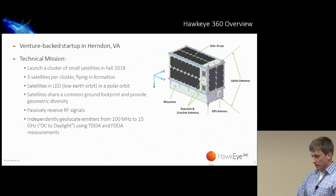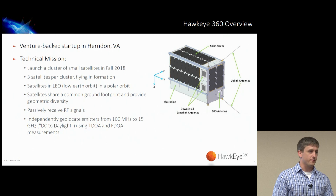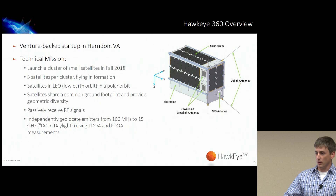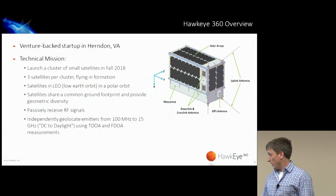This slide should look familiar if you were here yesterday, but I'll give another overview of our technical mission. We're launching in two months — two months from tomorrow, hopefully. We have a cluster of three small satellites that will fly and be co-visible, so one RF emitter on the ground will be received from all three satellites. We'll perform physical measurements — time of arrival, frequency of arrival — and do TDOA and FDOA measurements. We'll collect everything from 100 MHz to 15 GHz — DC to daylight.